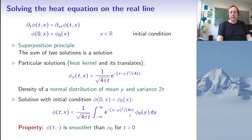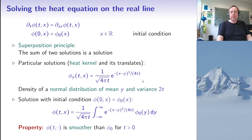This integral satisfies the equation because the parameter y doesn't play any role when plugged in. To check the initial condition, note that this type of integral is the convolution of two distributions in probability — the density of the sum of two independent random variables with distributions phi_0 and the heat kernel. When t equals 0, we have a normal distribution with mean y and variance 0, which is a random variable equal to y with probability 1. In that case, the convolution doesn't change phi_0, so phi(0, x) equals phi_0(x) as required.